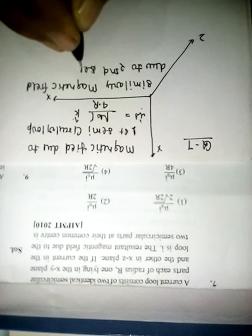Similarly, magnetic field due to second semicircular loop, B xz equal to mu naught I over 4R j cap.